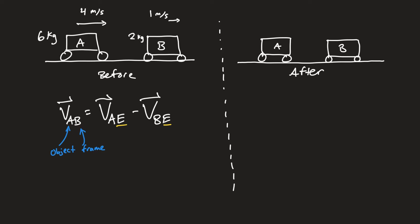Writing this out, the velocity of A as seen by somebody in car B would be positive three meters per second. On a coordinate axis with zero, plus, and minus, somebody in car B would see car A moving to the right — coming towards them — at three meters per second.